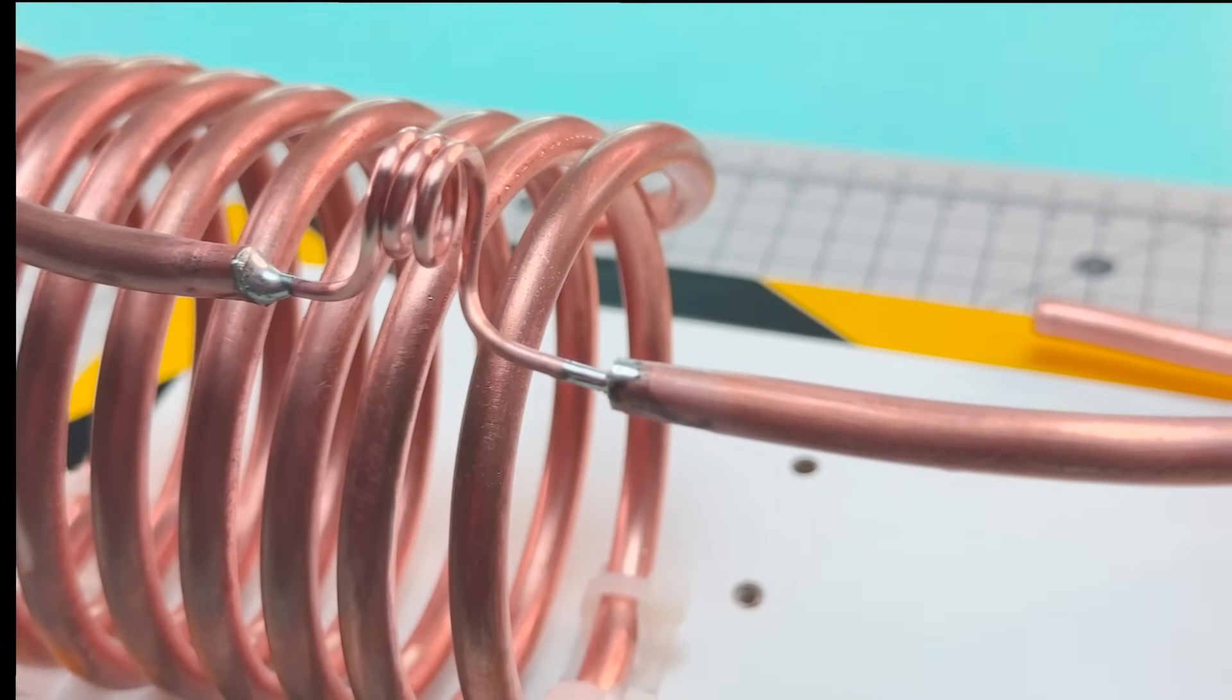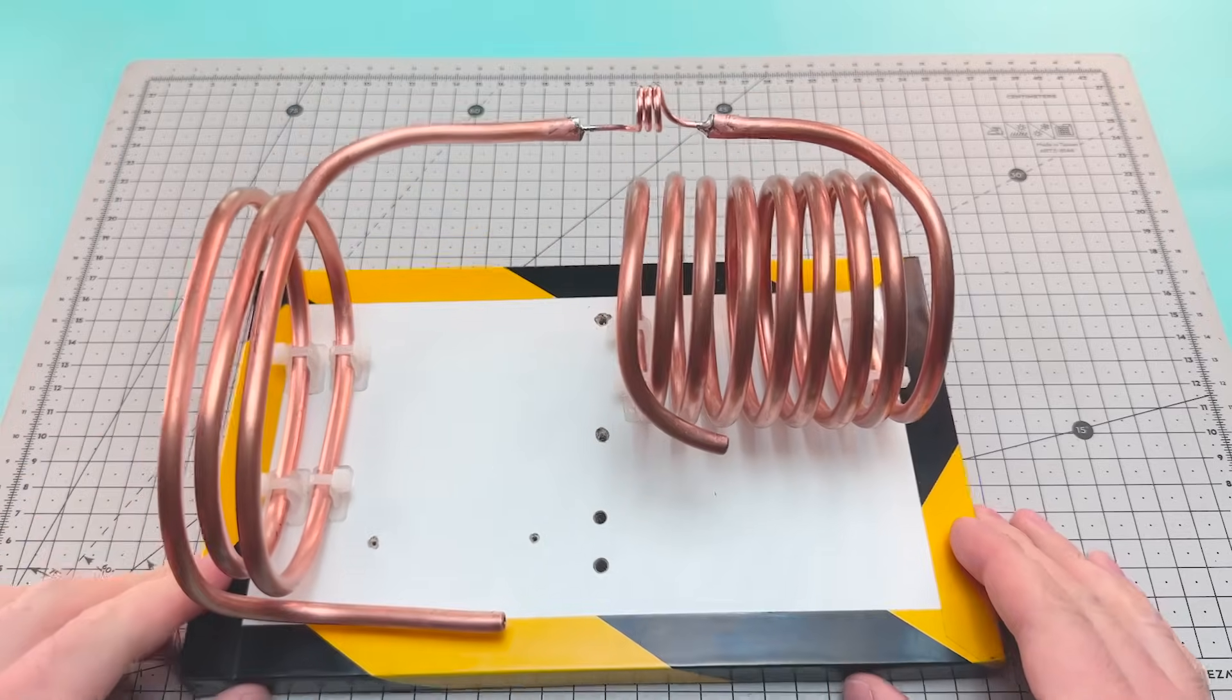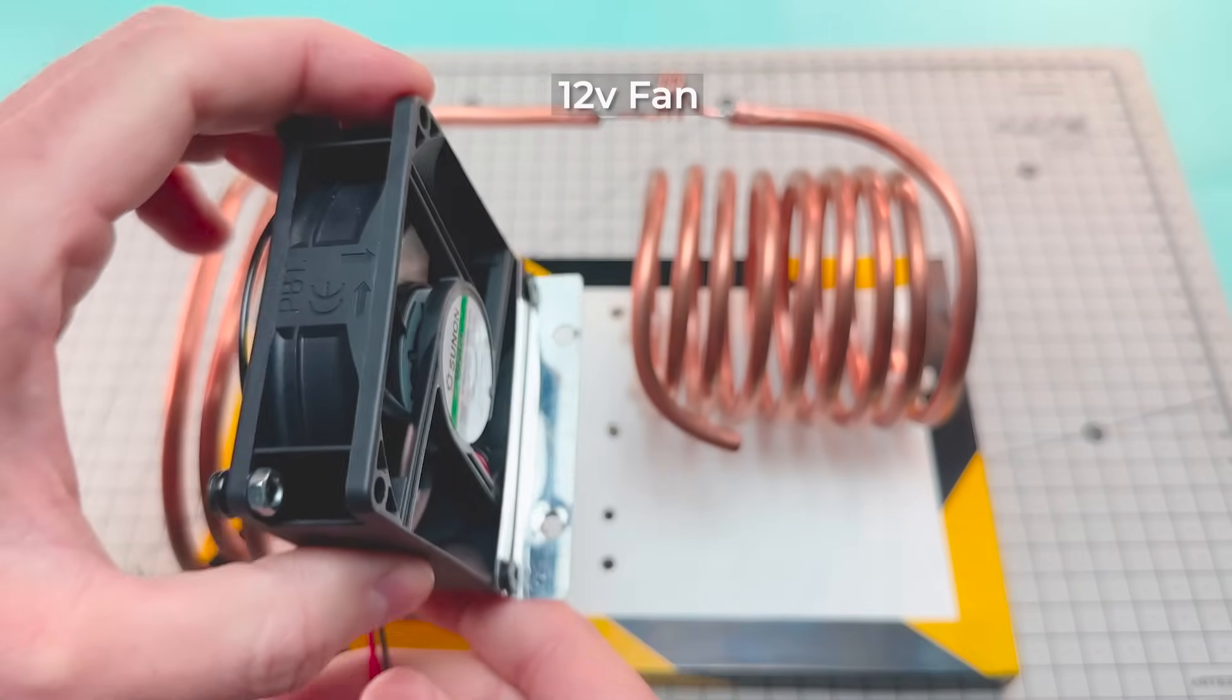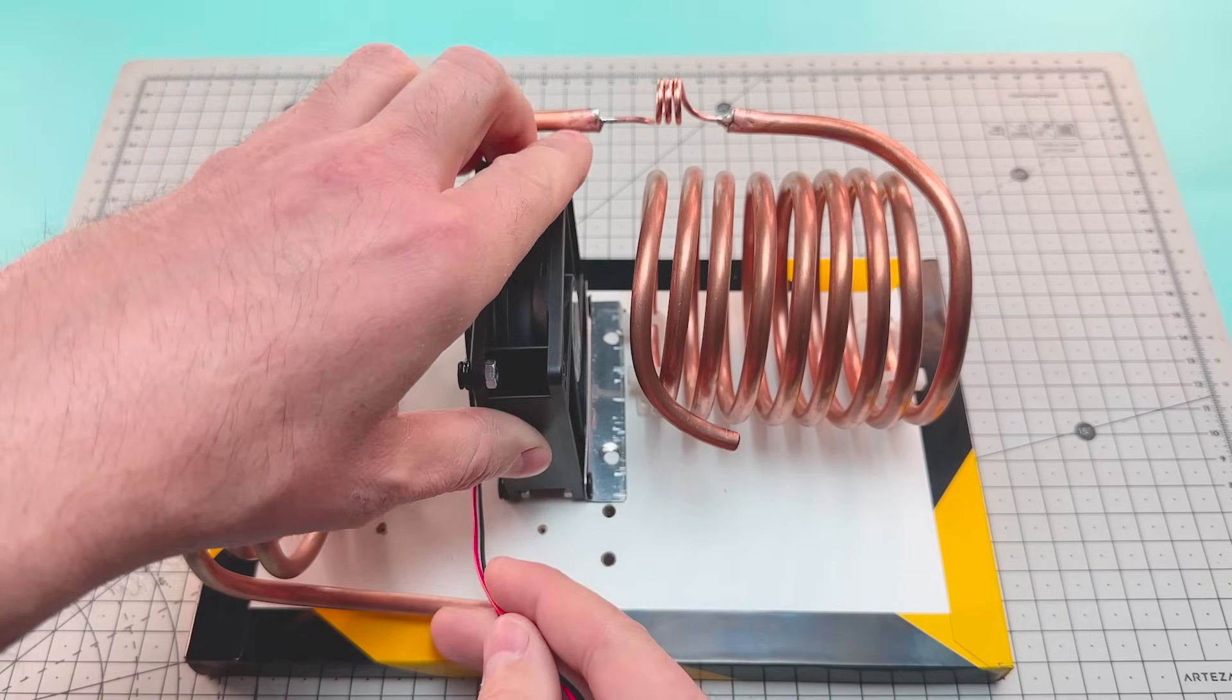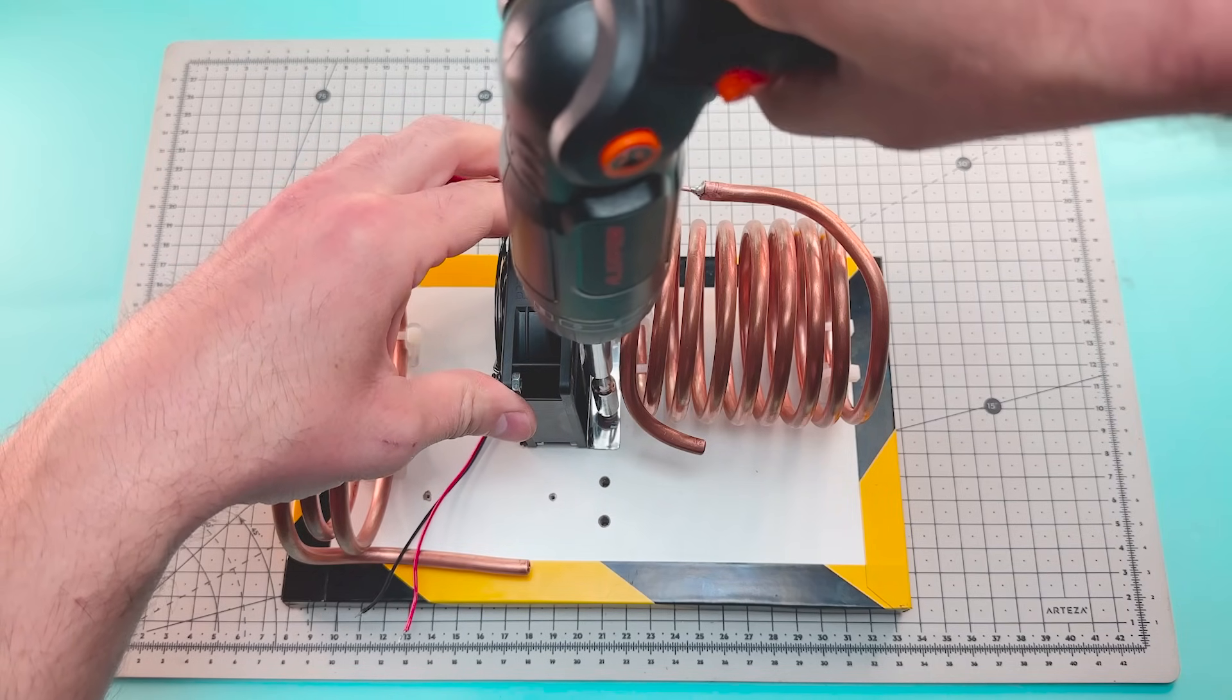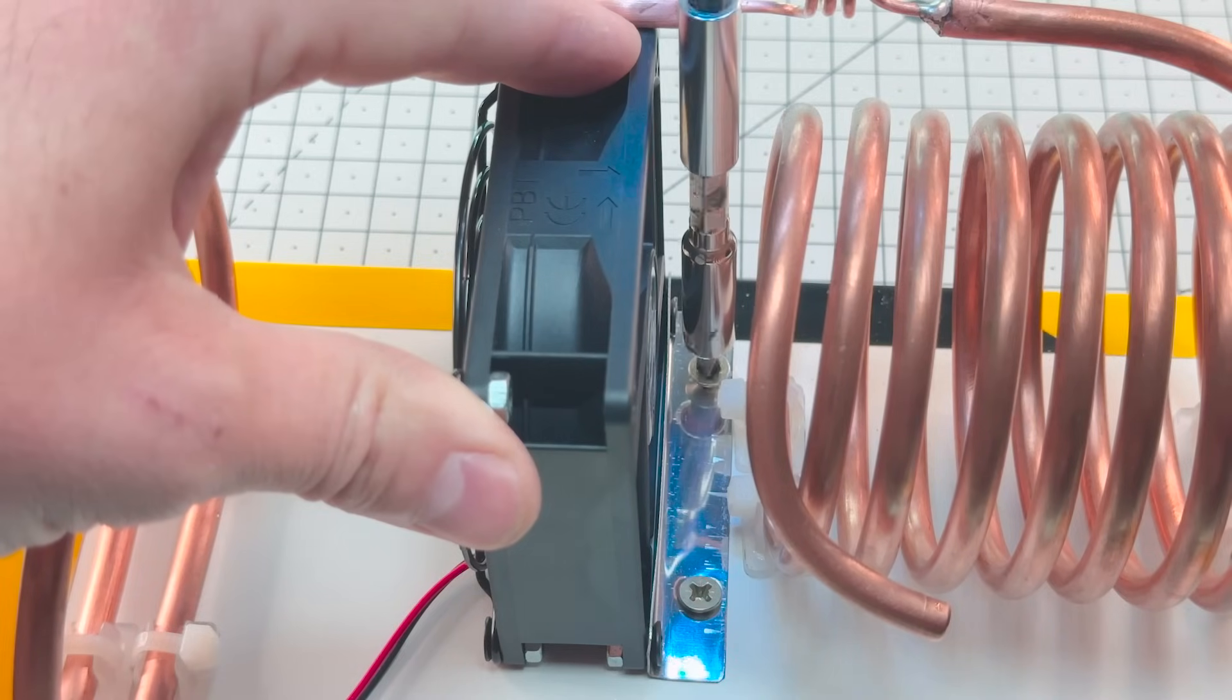Now that we have the circuit assembled, we're going to add a small and inexpensive 12-volt fan. We'll mount it to the base next to the evaporator. Air will flow through the conduit.